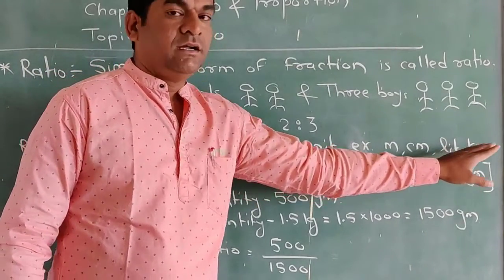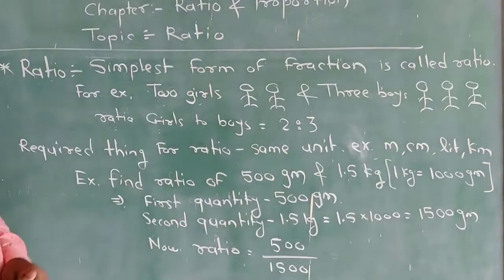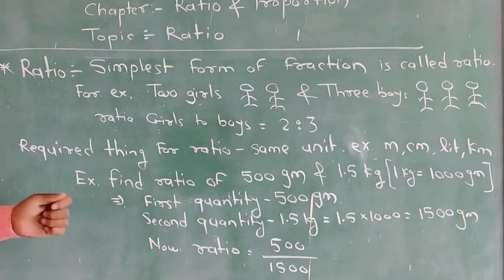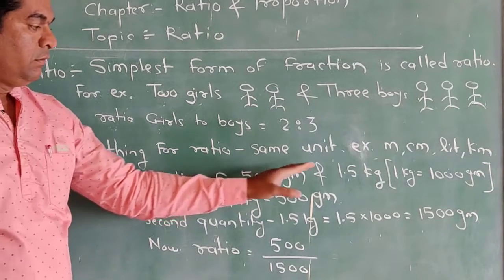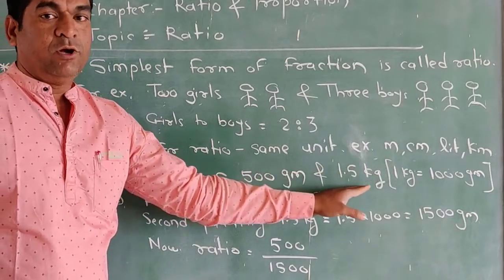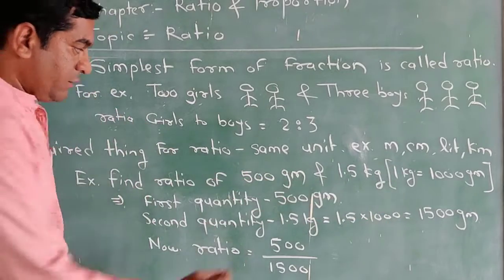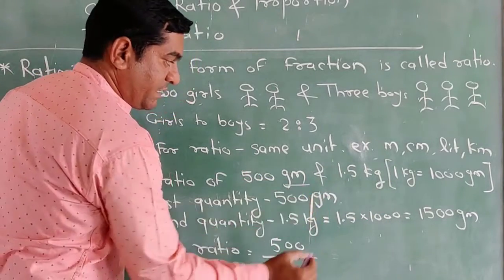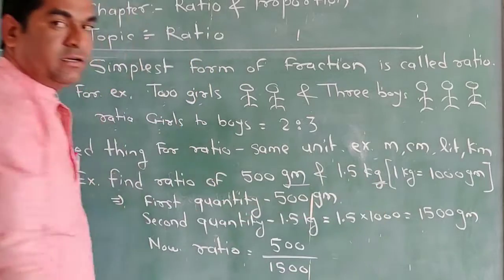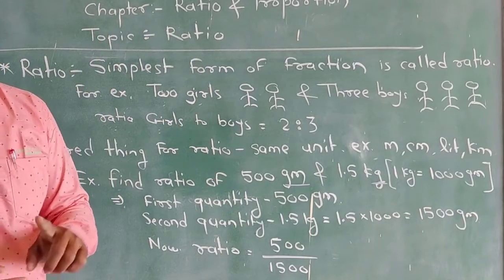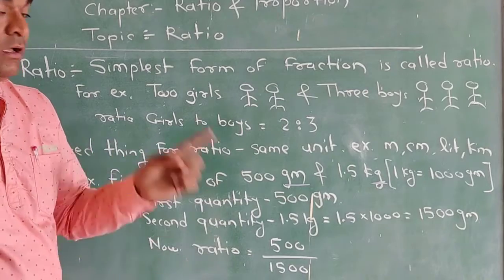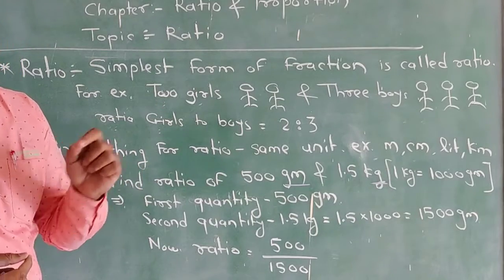Right now, let us take an example: Find the ratio of 500 grams and 1.5 kg. Once again, you will notice that the unit is gram and the unit here is kilogram. They are not the same, so we want to first make the unit same. For this, we need to know the basic: 1 kilogram equals 1000 grams.